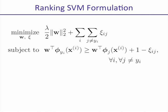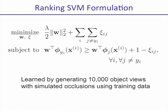We learn our weight vector W using a standard ranking SVM formulation, where we minimize the norm of W plus the sum of slack variables, subject to the constraint that for each training example, W transpose the feature vector for the correct object is greater than or equal to W transpose the feature vector for all other hypotheses by at least one minus the slack. We generate 10,000 object views with simulated occlusions using our training data in order to learn W.